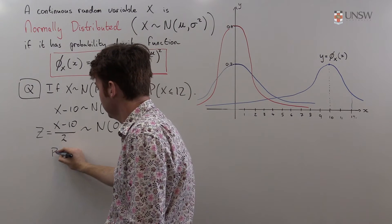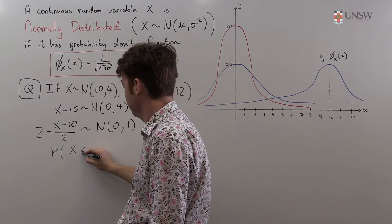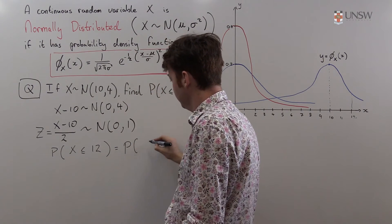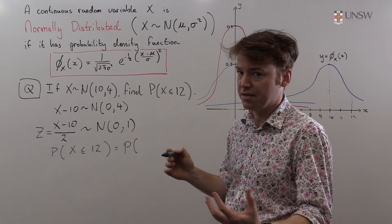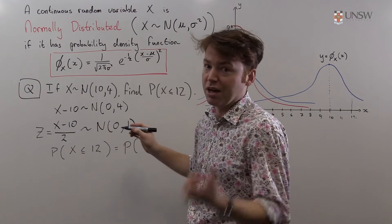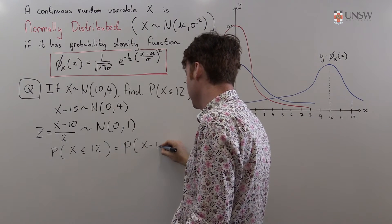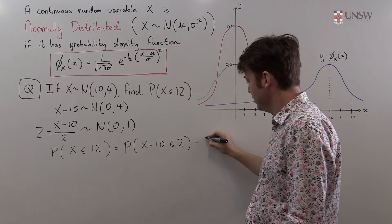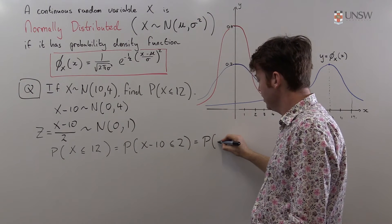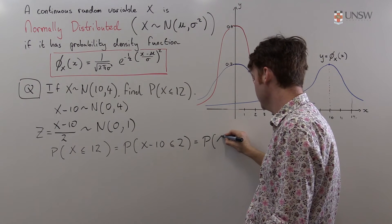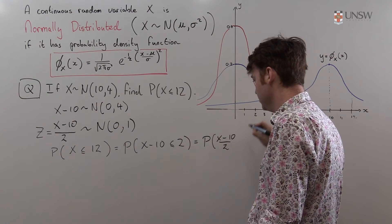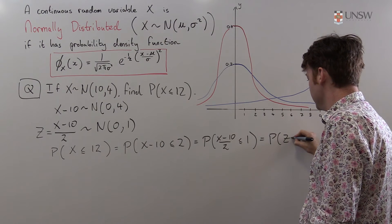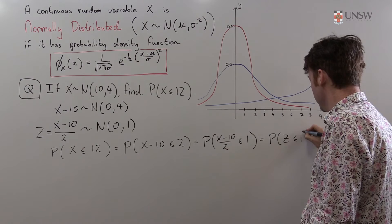So the probability that X is less than or equal to 12 is equal to the probability that, well now I need to slowly convert this into a question about Z's which I can actually calculate or at least look up in my table. That's X minus 10 is less than or equal to 12 minus 10 is 2, which is the probability that X minus 10 over 2 is less than or equal to 2 divided by 2 which is 1, which is the probability that Z is less than or equal to 1. Perfect.